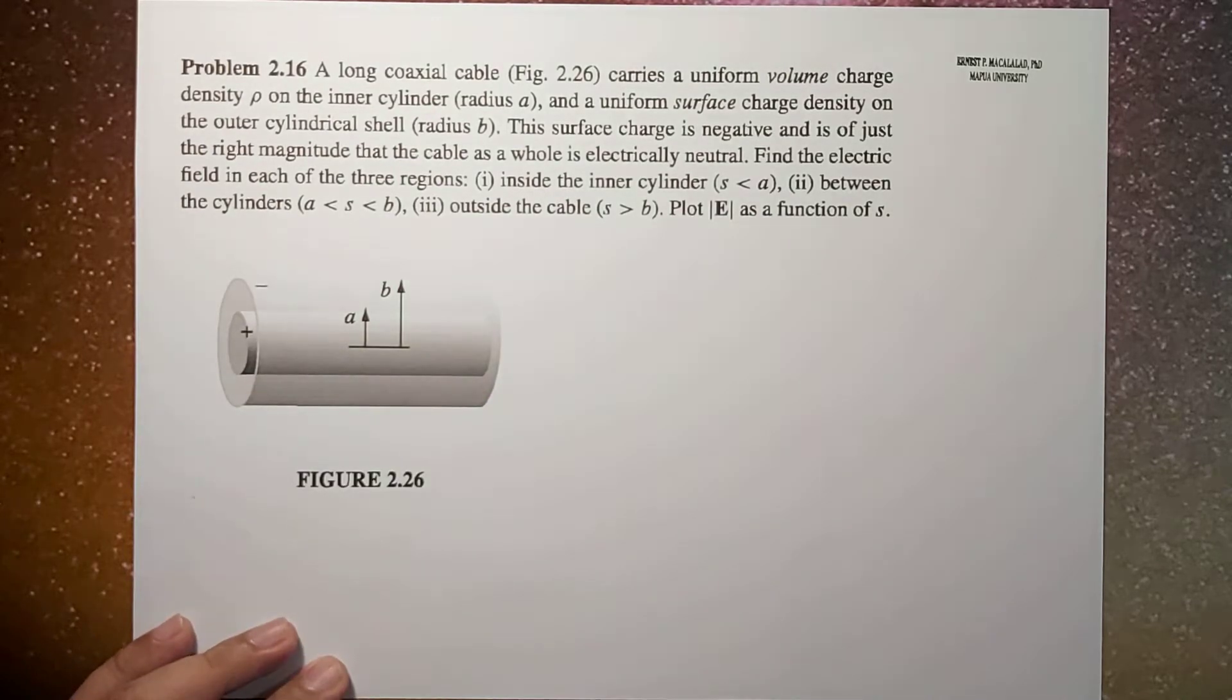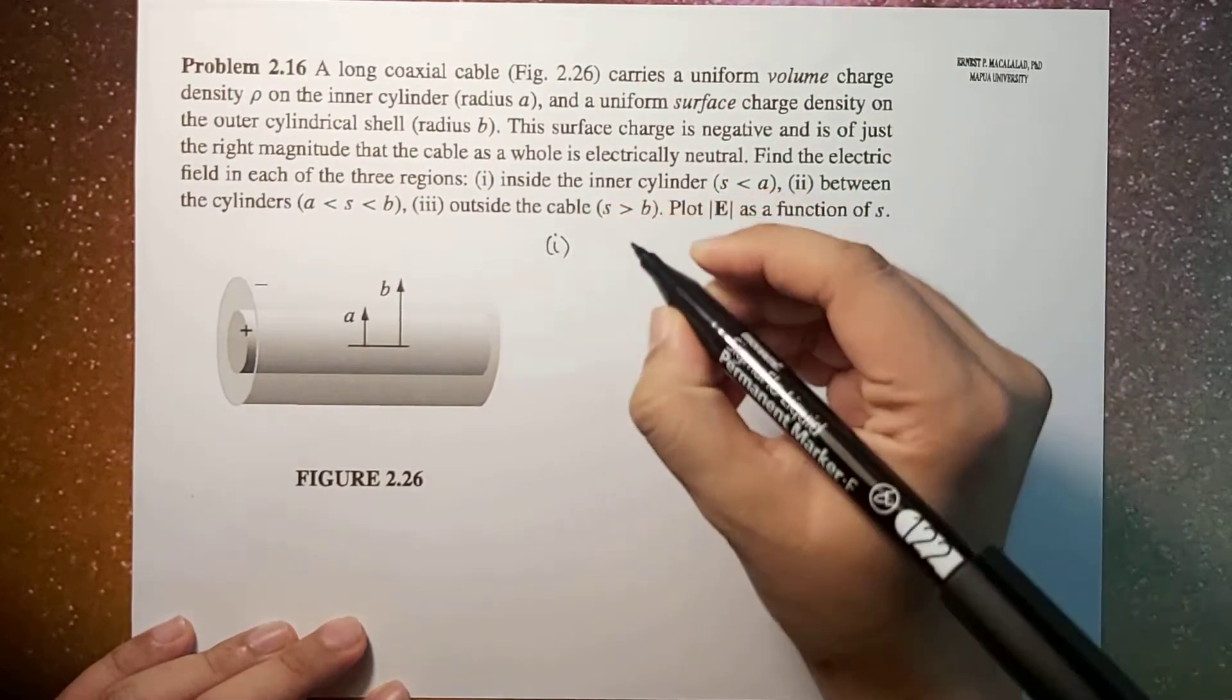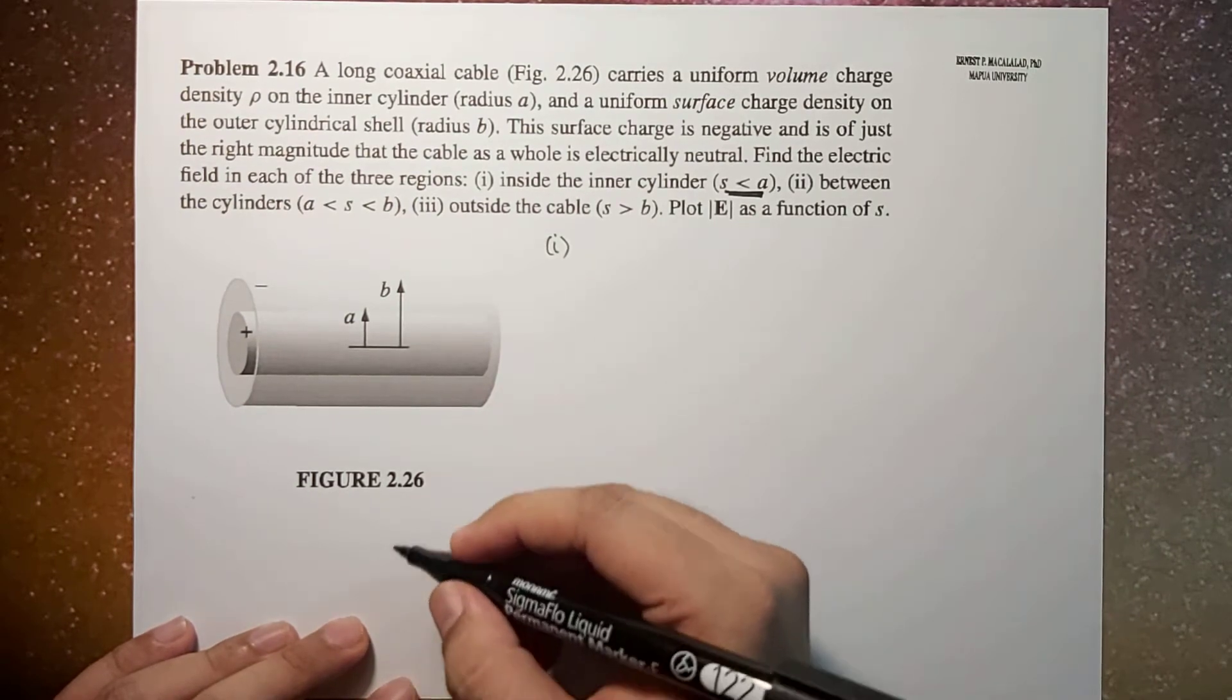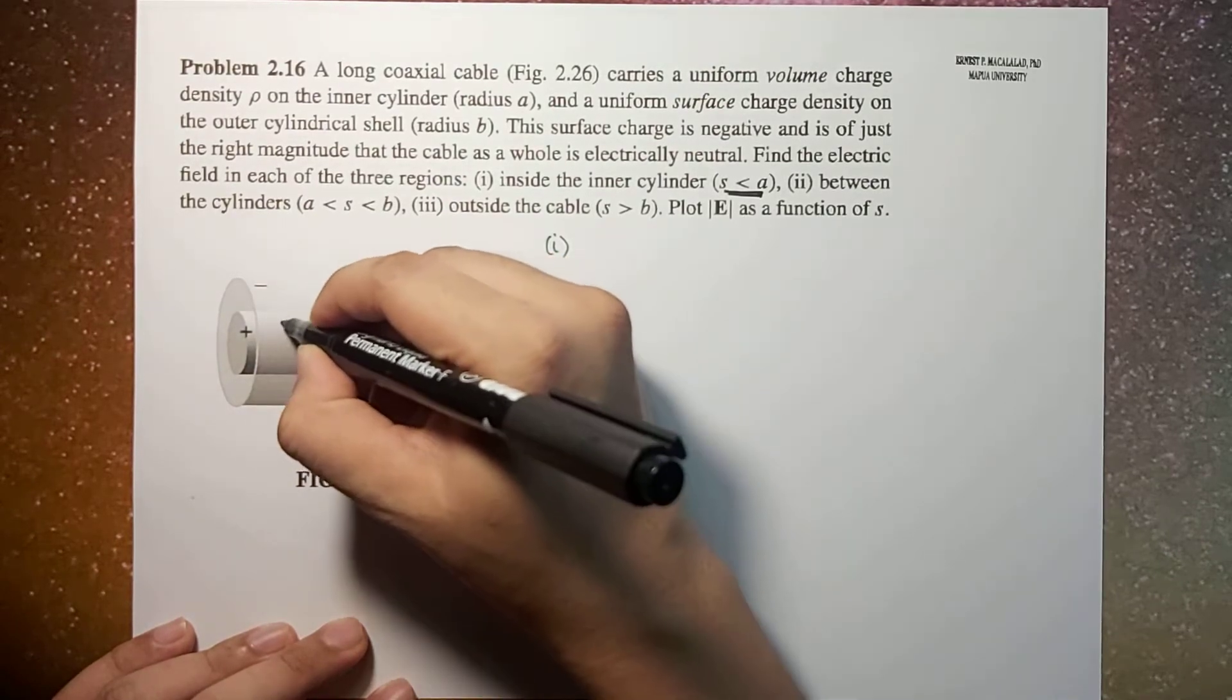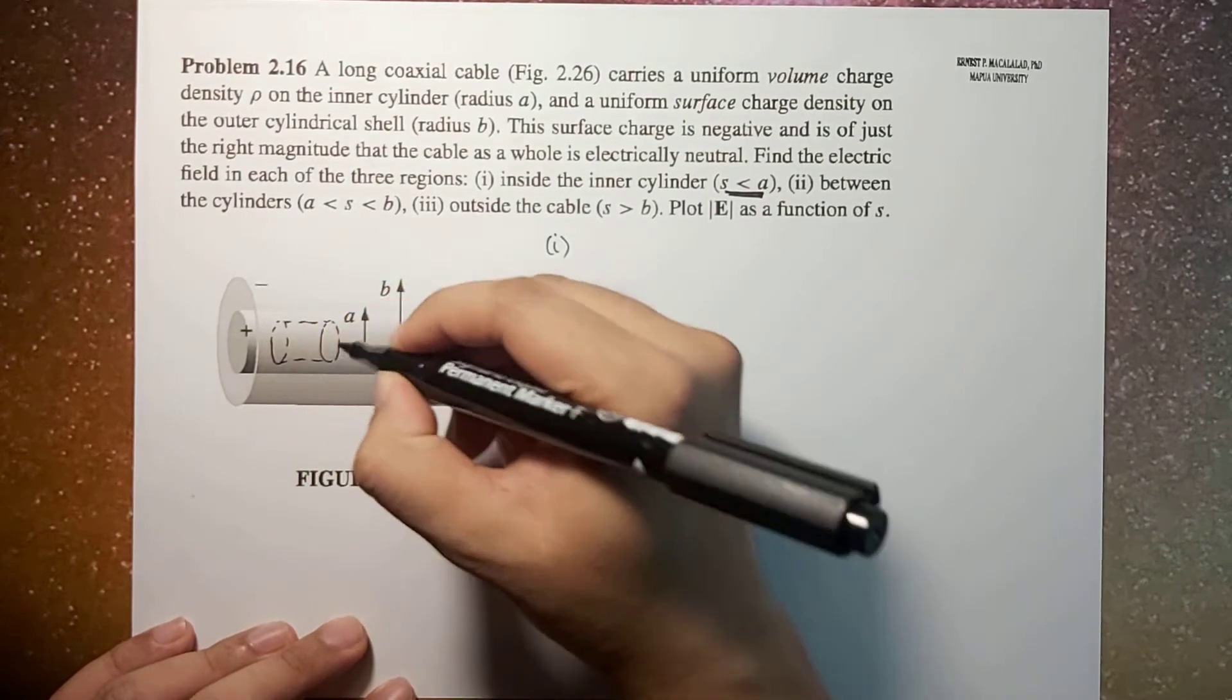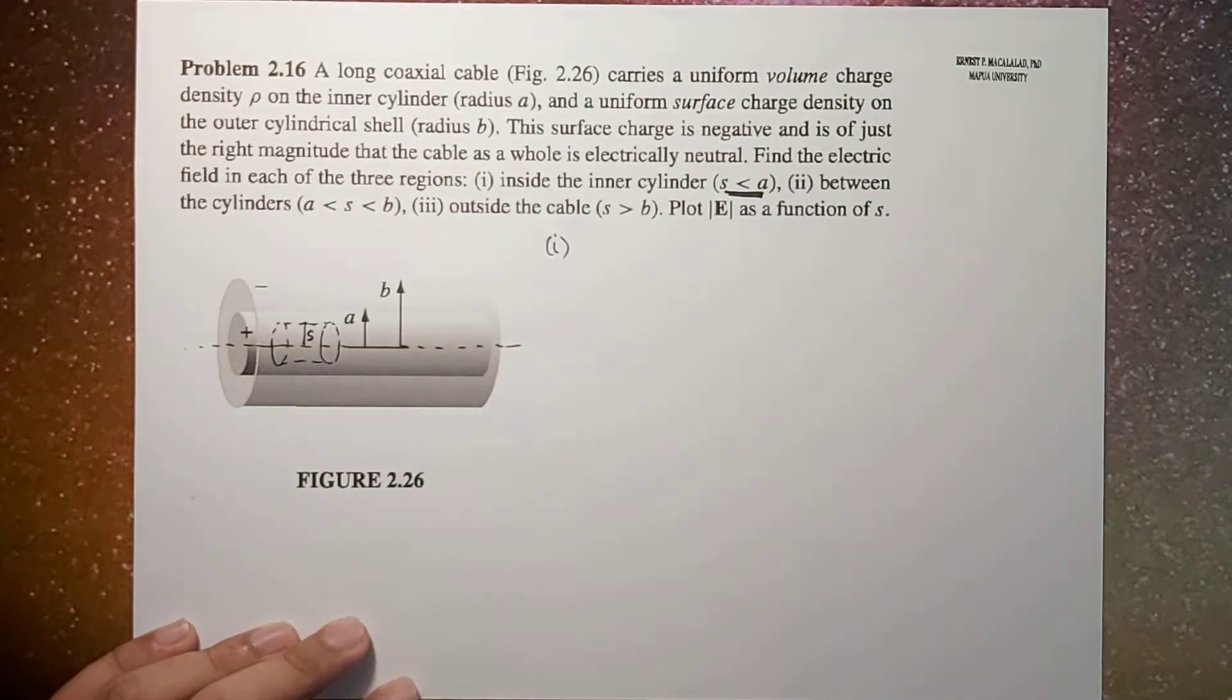Let's now use Gauss' law to calculate the electric field. Let's start with the first region, S less than A. For S less than A, the Gaussian surface will be like this. If this is the axis, this will be your S.